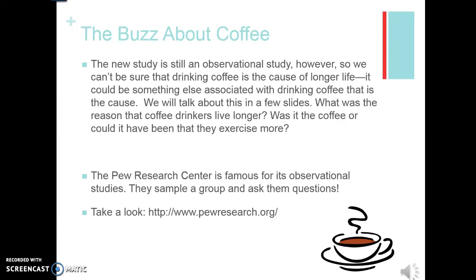We want to think about the question: what was the reason that coffee drinkers live longer? Was it the coffee? Could it be that they exercised more? There are a lot of things to take into consideration. When you see a study and they've come up with some sort of conclusion, you want to constantly be thinking: what kind of study was this? Was this observational? Can we actually say that drinking coffee is the cause of a longer life, or are these two just associated?